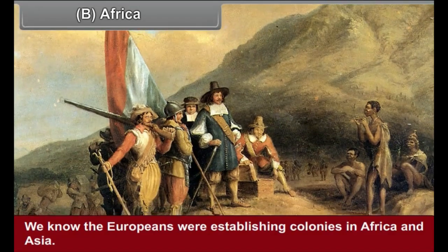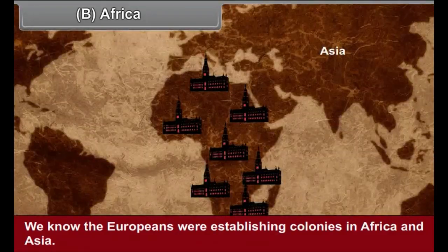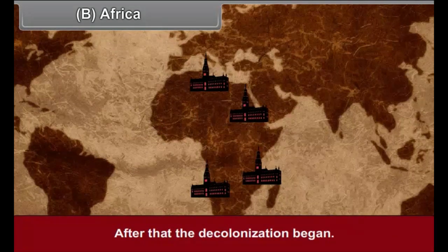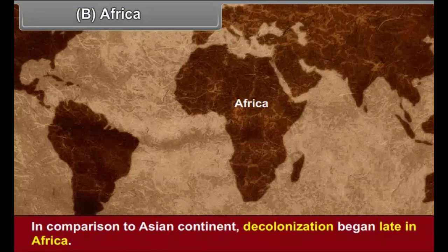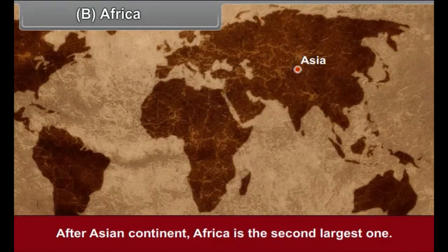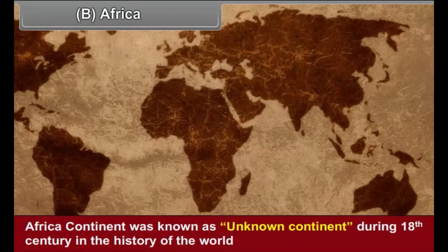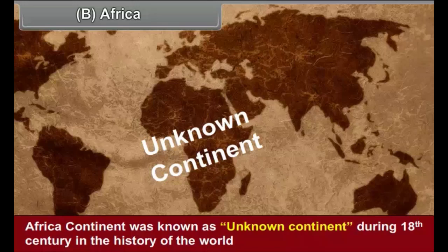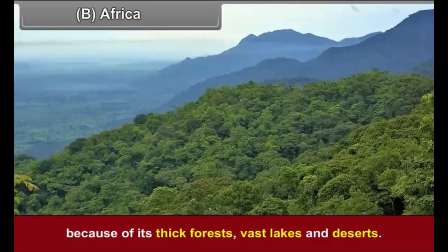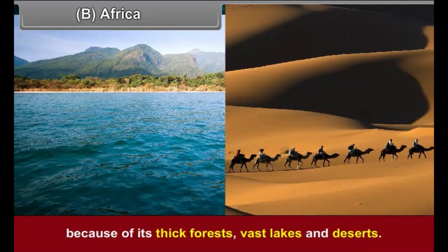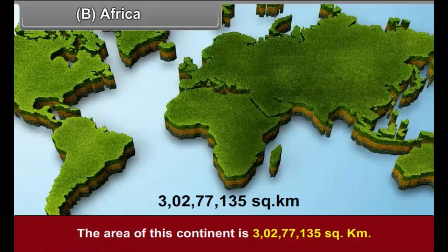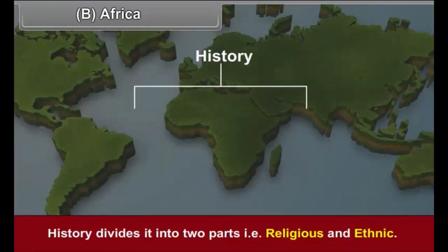Africa — we know the Europeans were establishing colonies in Africa and Asia. After that, the decolonization began. In comparison to the Asian continent, decolonization began late in Africa. Africa is the second largest continent. The African continent was known as the unknown continent during the 18th century because of its thick forests, vast lakes and deserts. The area of this continent is 3,277,135 square kilometers. History divides it into two parts: religious and ethnic.